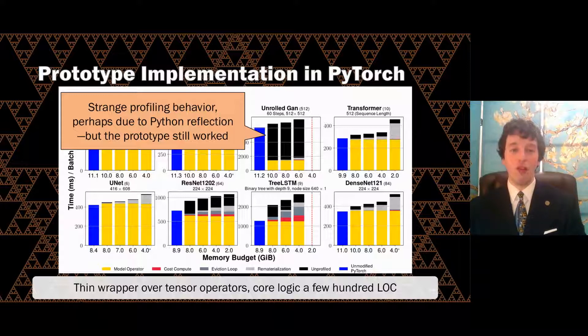We are not quite sure why our profiling instrumentation had difficulty tracking the breakdown of computations in UnrolledGAN, but we suspect it's due to the model's use of Python reflection and external dependencies. Nevertheless, the prototype was still able to run it under lower budgets, showing the generality of our approach.